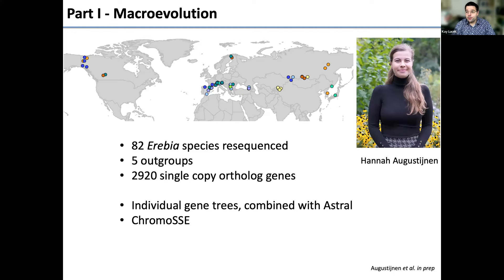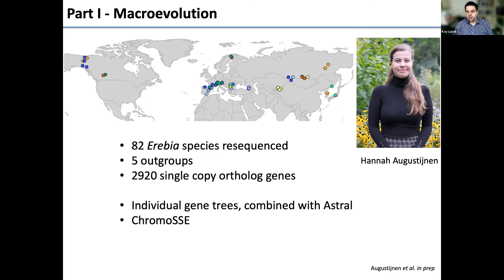For Hannah's project, we obtained 82 Aricia species for whole-genome resequencing, five outgroup species, and ended up with about 2,900 single-copy orthogroup genes. We generated individual gene trees and combined them with ASTRAL to run ChromoSSC. The result is what I believe to be the first almost fully resolved dated phylogeny of Aricia, resolving most previously described groups — with a few surprises.